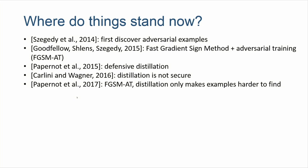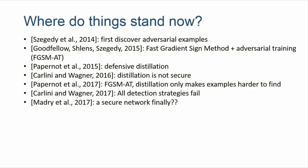Another line of work tried to detect when an adversary is trying to fool you — can I see that this input is unnatural, abstain from making a prediction, and avoid catastrophic errors? But Carlini and Wagner again showed that all existing detection strategies failed; they have attacks that can break all of them. This is not an exhaustive list, but shows the dynamic: a new defense is proposed, and in a few months Carlini and Wagner might just break it again.